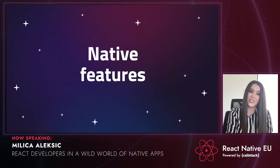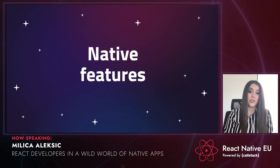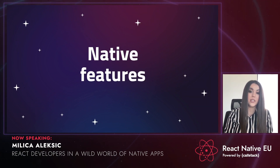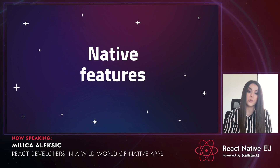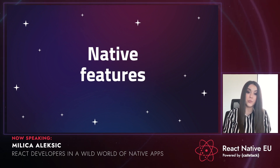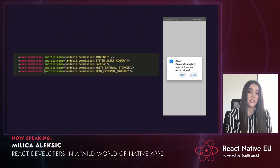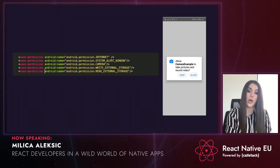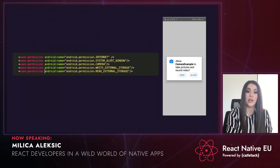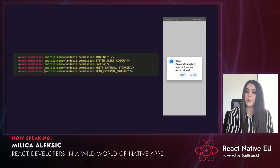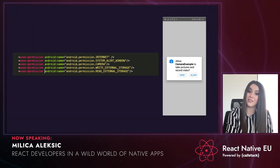Mobile also offers many native features like push notifications and camera access that aren't commonly used on the web. When building an app you must think about when and how to ask users for permissions, and how to handle those permissions going forward. For example, when asking for camera permission to update a profile picture, you must check for that permission every time since the user may have denied it.